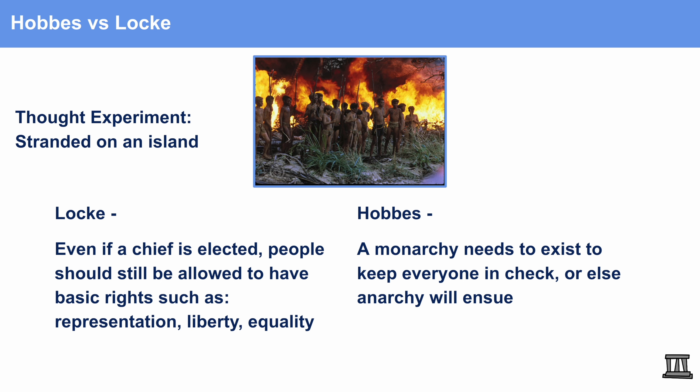Now we'll talk about a common thought experiment that compares the ideas of Hobbes and Locke. Imagine a group of boys stranded on an island. Locke would say that even if a chief is elected, that chief should still give people basic rights such as representation, liberty, and equality — the government should work towards giving natural rights to its citizens. However, Hobbes would say that a complete monarchy would need to exist to keep everyone in check, or else anarchy will ensue. It's a strong representation of how differently these two philosophers perceive how a higher authority should act for its citizens.